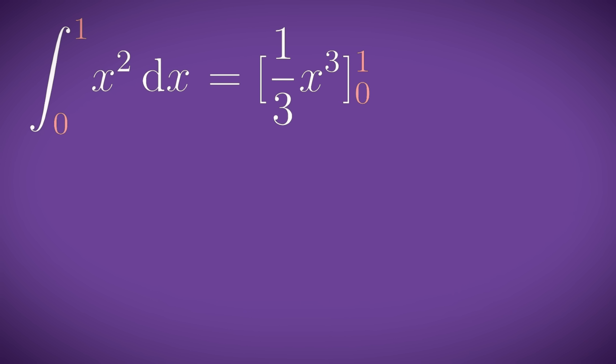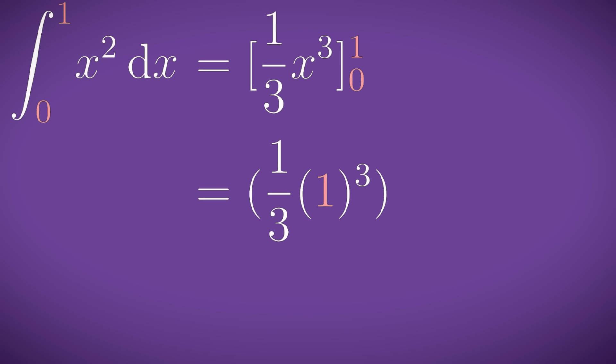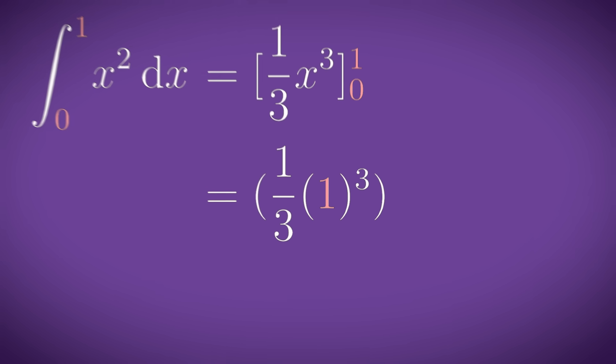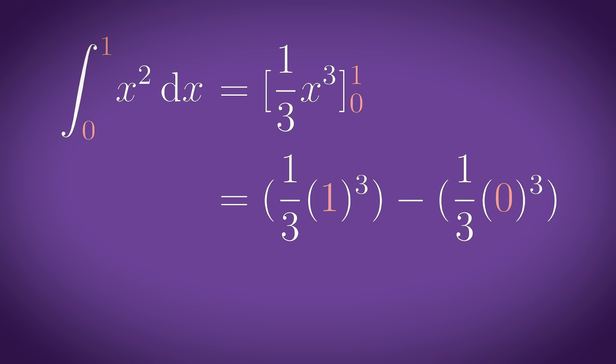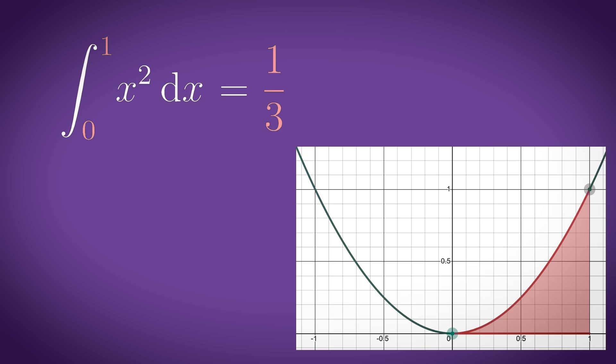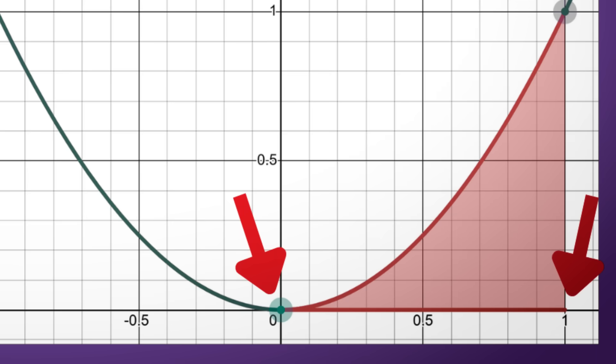Now to evaluate the integral bar you just write the equation again but with all the x's replaced with the top limit and then subtract the entire equation again only this time replacing all the x's with the bottom limit. This should give you a number at the end and this number is actually the area under the curve of the graph we originally integrated and bounded by the upper and lower limits.